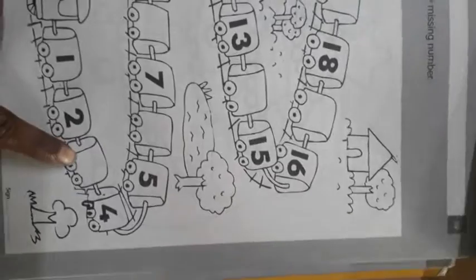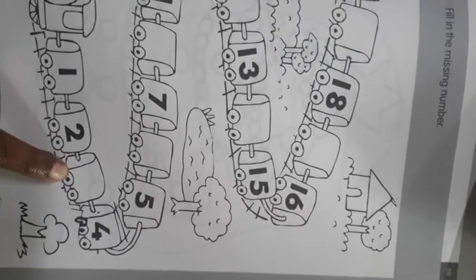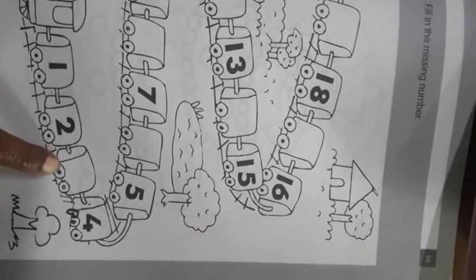What is this? This is a train and you can see the numbers 1, 2, and one number is missing. Which one? 3. So you have to write here number 3.